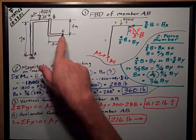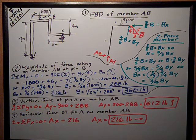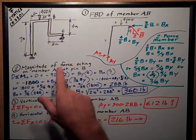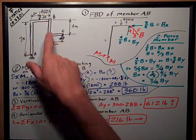However, member BC is a two-force member because it only has two points of application of force, B and C.